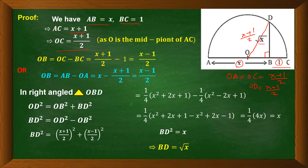We have to find OB. There are two methods: either OB equals OC minus BC, which gives (x+1)/2 minus 1 equals (x−1)/2; or OB equals AB minus AO, which gives x minus (x+1)/2, also equal to (x−1)/2. Either way, OB equals (x−1)/2.